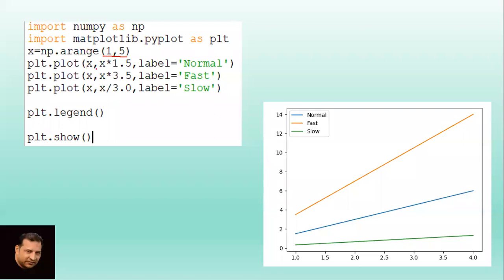Let's see some examples. You must try all these examples. I have taken some random numbers for x, a range 1 to 5. plt.plot(x, x*1.5, label equals normal). Similarly I have taken some other values like x*3.5, label equals fast, then x/3.0, label equals slow. This example is just to discuss labels.